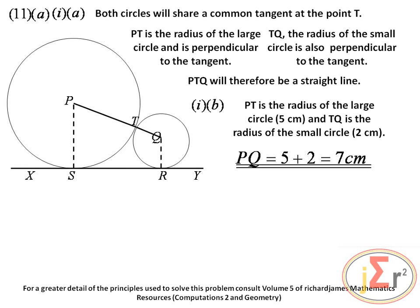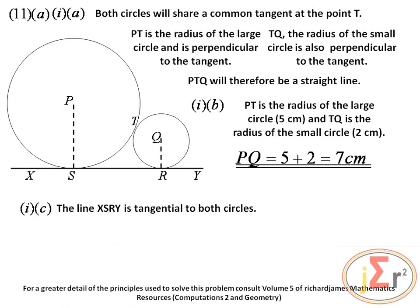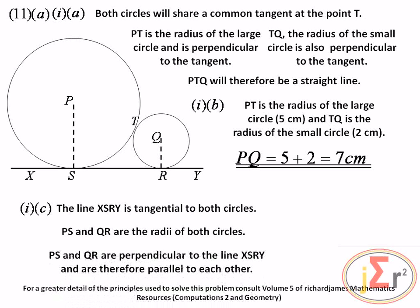PS is parallel to QR because the line XSRY is tangent to both circles. PS and QR are radii drawn to the point of tangency, and the radius and tangent are perpendicular to each other. Since PS and QR are both perpendicular to the line XY, they are therefore parallel to each other.